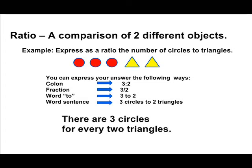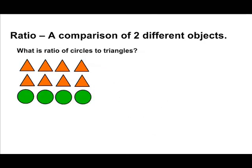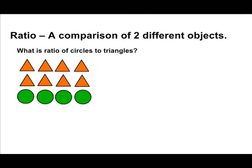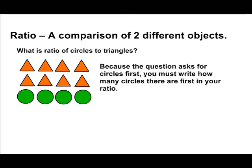Now let's write a ratio using this example. We see that there are 8 triangles and 4 circles. The first impulse would be for someone to write 8 compared to 4, but this would be incorrect. When we look at the question, the ratio asks for circles first and triangles last. So first we must count the number of circles and we see 4 circles, and we see 8 triangles, so the ratio we initially write will be 4 compared to 8.